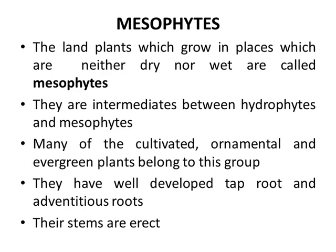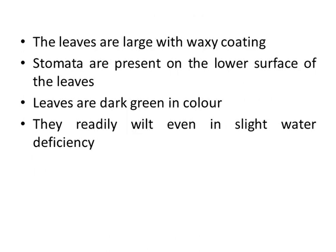Mesophytes: the land plants which grow in places which are neither dry nor wet are called mesophytes. They are intermediate between hydrophytes and xerophytes. Many cultivated ornamental and evergreen plants belong to this group. They have well-developed tap roots and adventitious roots. Their stems are erect. Their leaves are large with a waxy coating. Stomata are present on the lower surface of leaves. Leaves are dark in color.